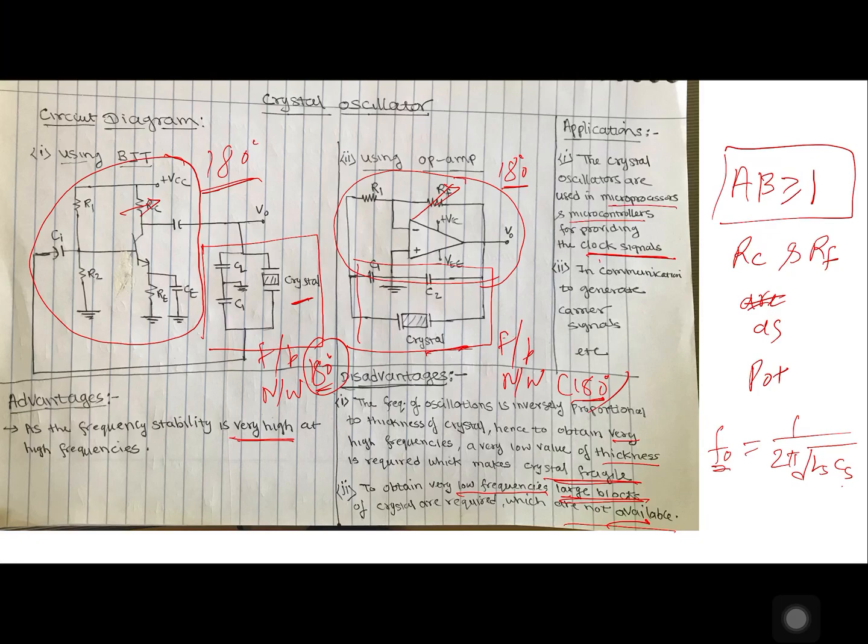Now we all use digital circuit where we need clock signals. So clock signals are generated using crystal oscillators. And even in microprocessor, microcontrollers or even processors clock signals are generated by using crystal oscillator. Crystal oscillators are also used in communication circuit to generate carrier signals.